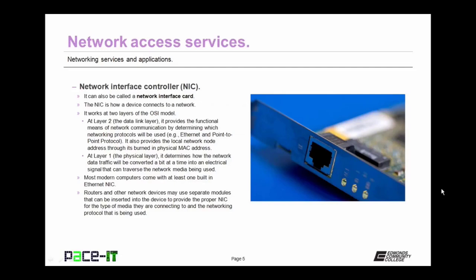At layer 1, the physical layer, the Network Interface Controller determines how the network data traffic will be converted, a bit at a time, into an electrical signal that can traverse the network media being used — it provides the connection to the network. Most modern computers come with at least one built-in Ethernet NIC. Routers and other network devices may use separate modules that can be inserted to provide the proper NIC for the type of media and networking protocols being used.